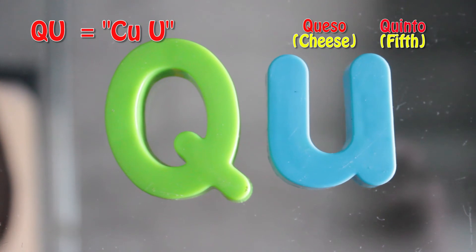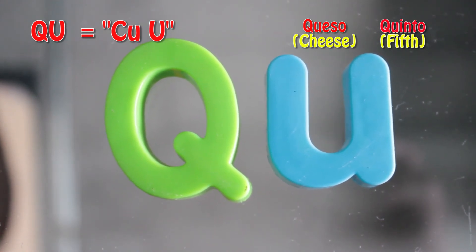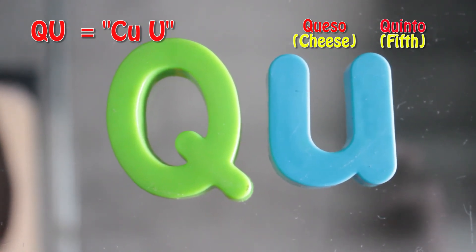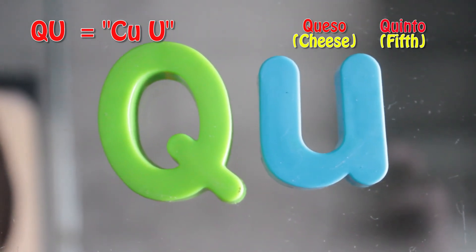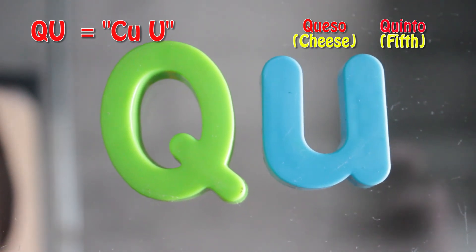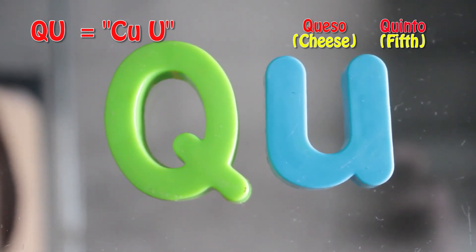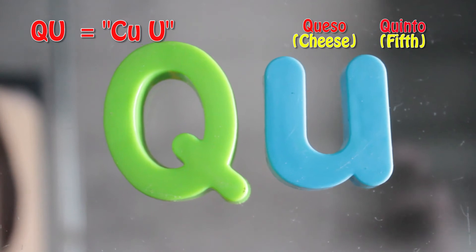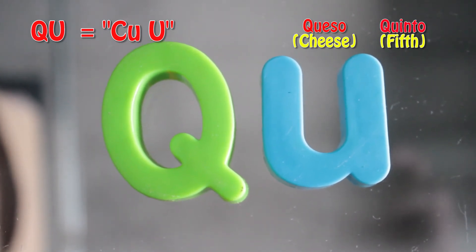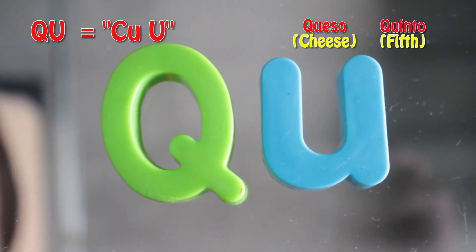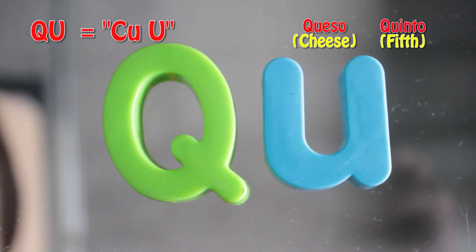QU. Queso. Quinto. This basically has the same rules as the previous diagraph — in combination with vowels E and I, this makes the vowel U soundless. The only difference is that this is the only use for consonant Q.